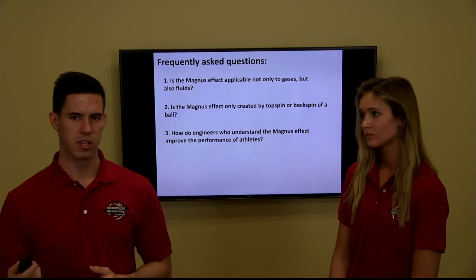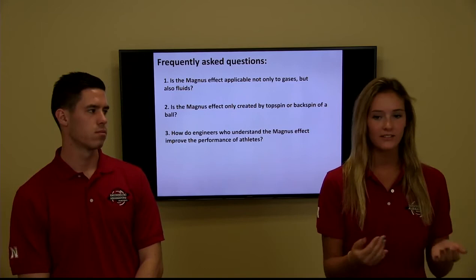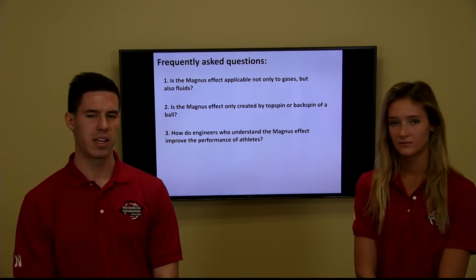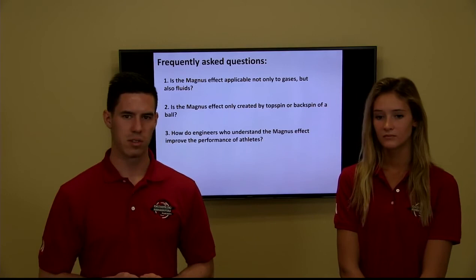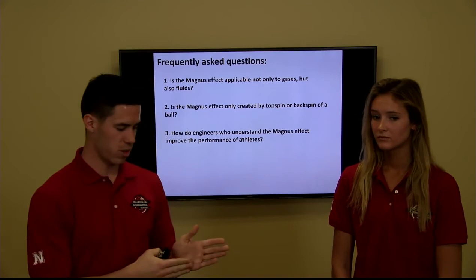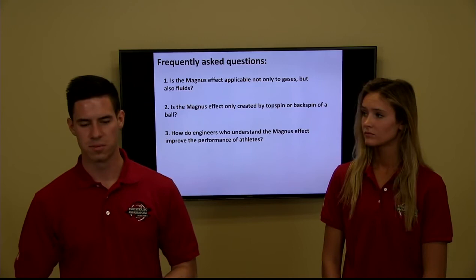The second question is: is the Magnus effect only caused by topspin or backspin, or can it apply in any rotational direction? The Magnus effect can also be created by sidespin, causing the object to move sideways — such as in the soccer example. The third question is: how do engineers design equipment for athletes using the Magnus effect? Knowing that the speed and amount of rotation makes the Magnus effect greater, engineers design things like soccer cleats, golf clubs, and ping pong paddles. Ping pong paddles have a rubber grip on the inside which gives more grip when hitting the ball, allowing more spin and thus a bigger Magnus effect, making shots harder to return.